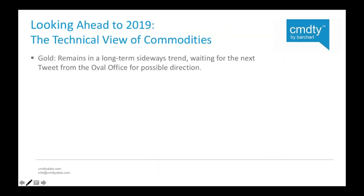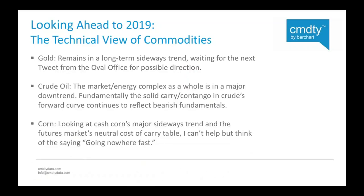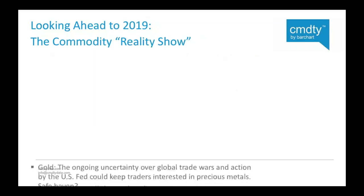Technical view of commodities: gold is in a long-term sideways trend, waiting for the next tweak from the Oval Office. Crude oil and the energy complex as a whole is in a major downtrend — I do not look for that to change, and we have solid carry/contango meaning bearish fundamentals. Corn's cash market sideways trend and neutral cost of carry table means this thing is going nowhere fast. That's just the way corn likes it — it'll take some earth-shattering news at some point to break things up.